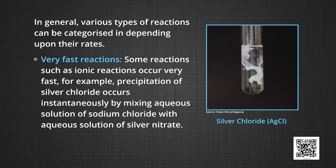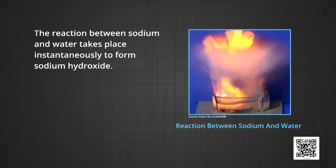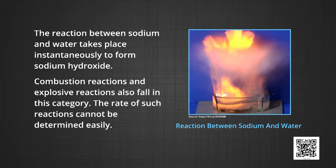In general, various types of reactions can be categorized depending upon their rates. First, the very fast reactions. Some reactions such as ionic reactions occur very fast. For example, precipitation of silver chloride occurs instantaneously by mixing aqueous solution of sodium chloride with aqueous solution of silver nitrate. In the chemistry lab, in qualitative analysis, reactions are very fast. Silver nitrate reacts with sodium chloride to give a precipitate of silver chloride and sodium nitrate. Also, the reaction between sodium and water takes place instantaneously to form sodium hydroxide. Combustion reactions and explosive reactions also fall in this category. The rate of such reactions cannot be determined easily.